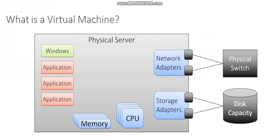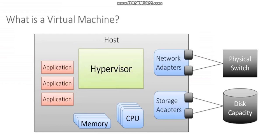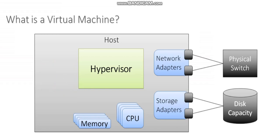Now, let's think about a virtual machine. And instead of having a physical server here, let's replace it with a host. And instead of installing a simple operating system on this host, let's install a hypervisor instead. And now we're not going to run applications on this physical system — we're actually going to run virtual machines, each with their own independent operating system.